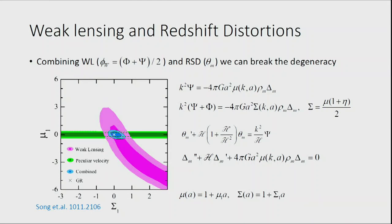If you use weak lensing, which is determined by (phi + psi), it is sensitive to the sigma function. But at the same time it is also determined by delta, which is determined by mu. So there is a degeneracy between mu and sigma. If you use just one probe — weak lensing or RSD — you get a huge degeneracy and cannot say much. But combining the two, you can get a constraint. Using real data from SDSS and weak lensing from CFHTLS, the constraint is currently very weak — about order-one — but Lambda-CDM is consistent.